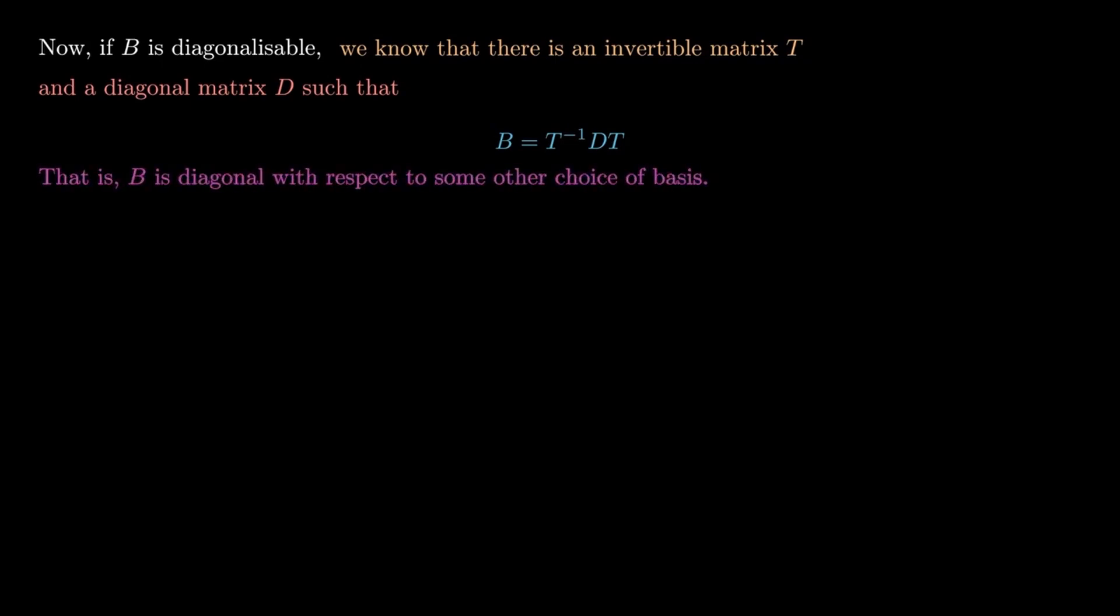a diagonal matrix if we change the basis of our vector space—in other words, if we just change the grid, we can get B to be written as a diagonal matrix. In particular, if A and B are